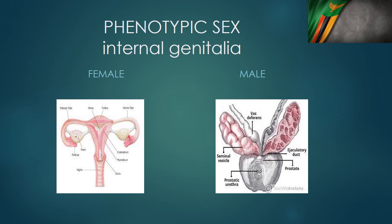We also have internal organs that help us categorize whether somebody is female or male. If they have fallopian tubes, a uterus, and a cervix, we say this must be female. On the male side, if you see vas deferens, seminal vesicles, and ejaculatory ducts, you categorize that person as male. This is phenotypic sex based on internal organs.